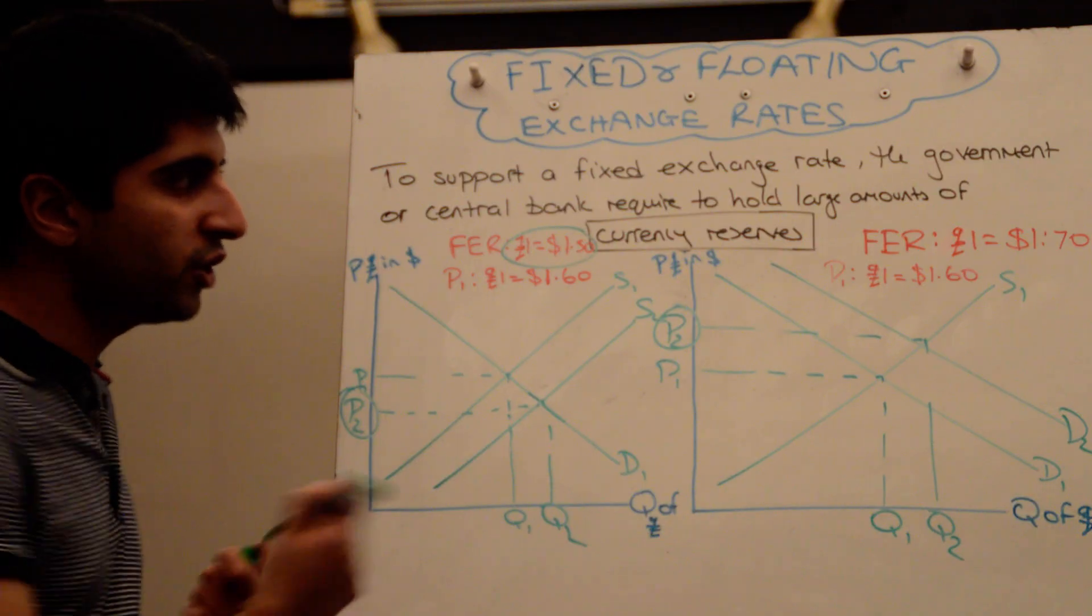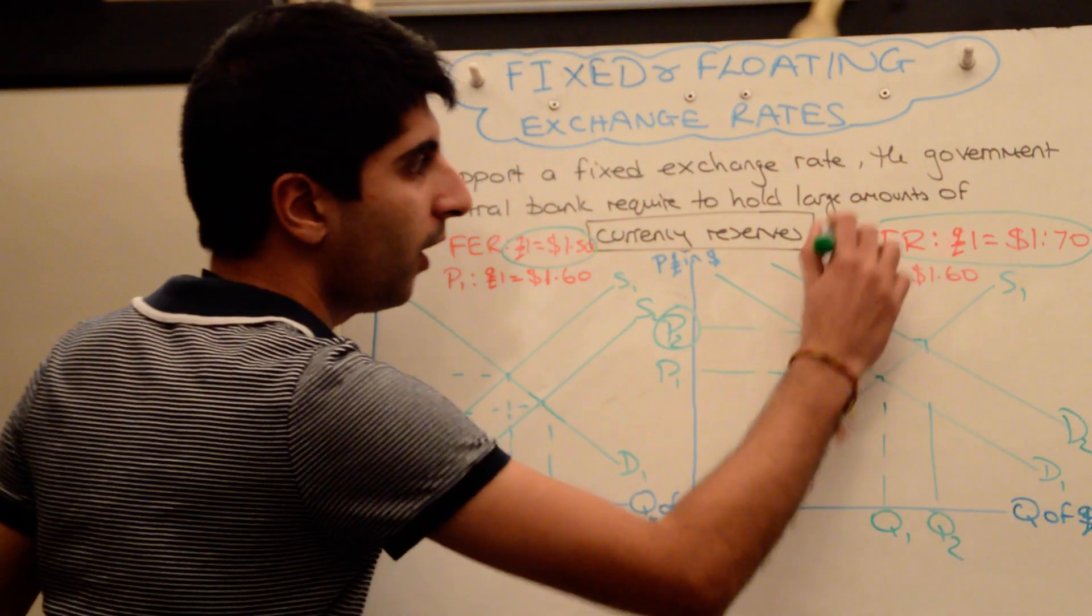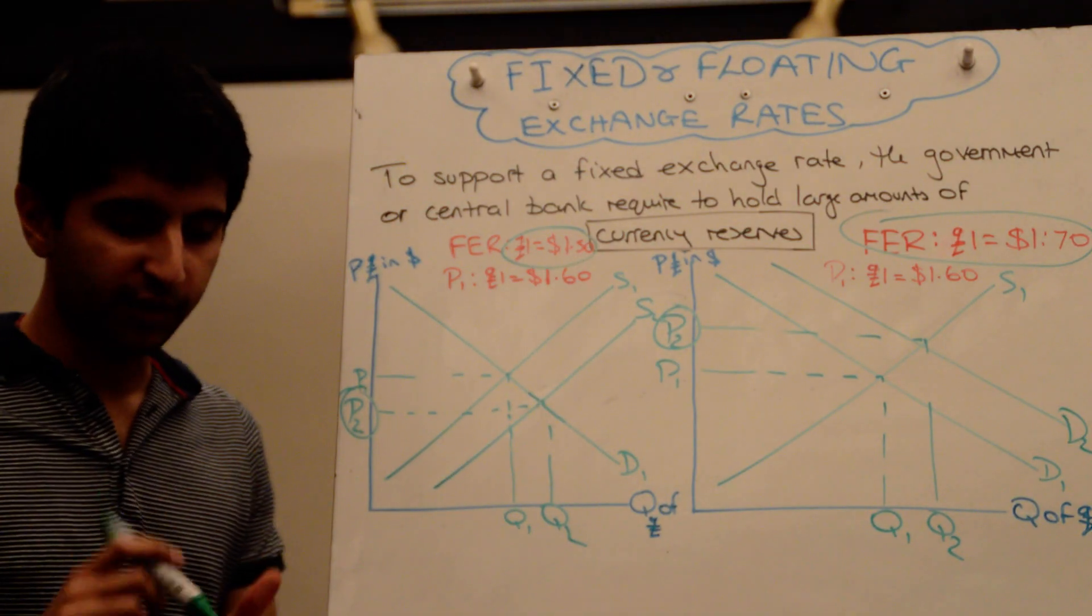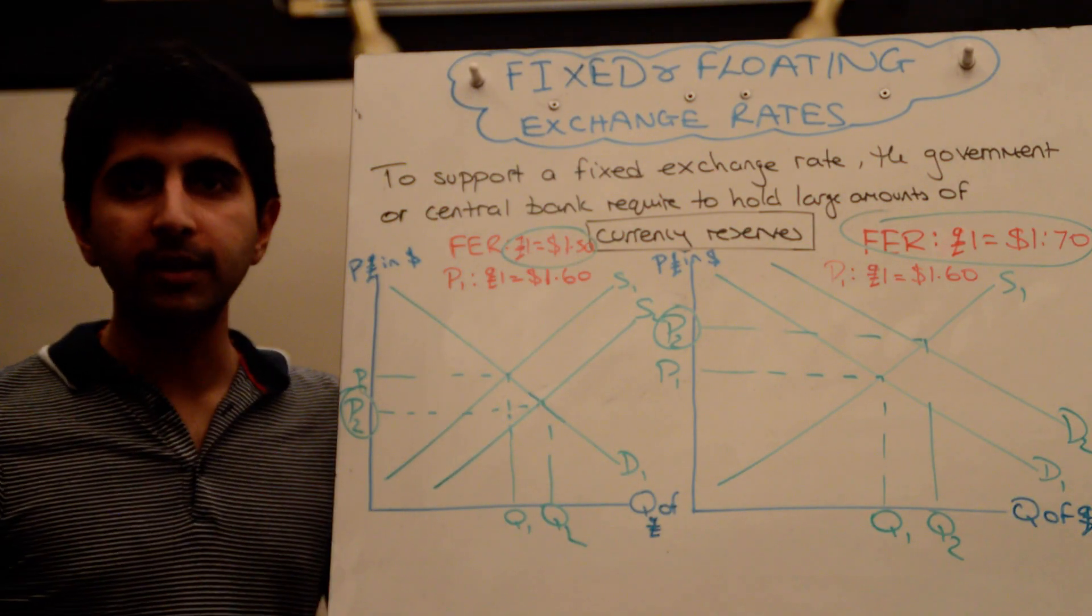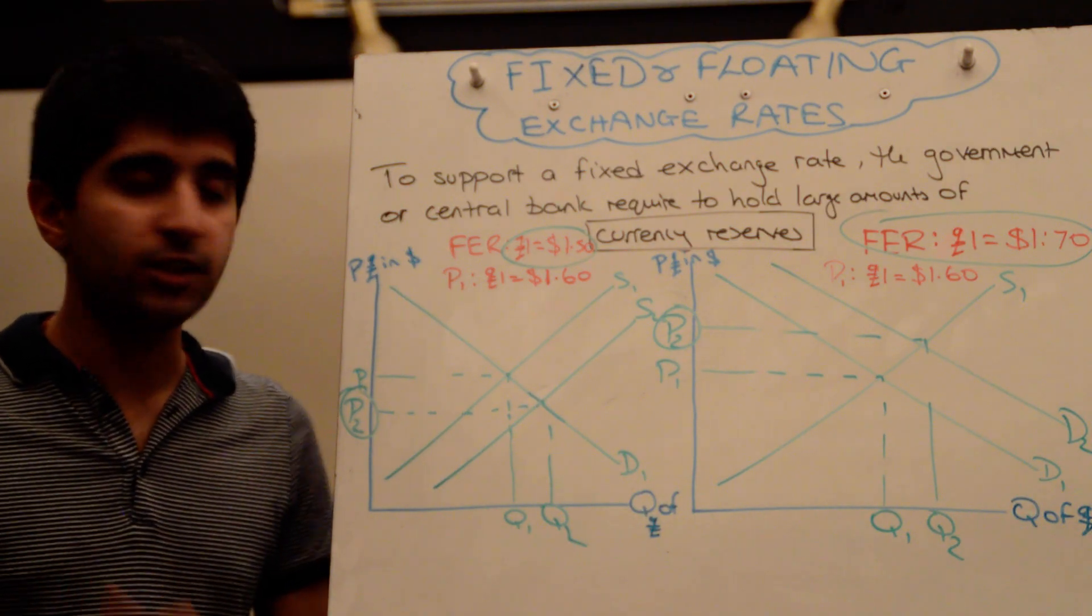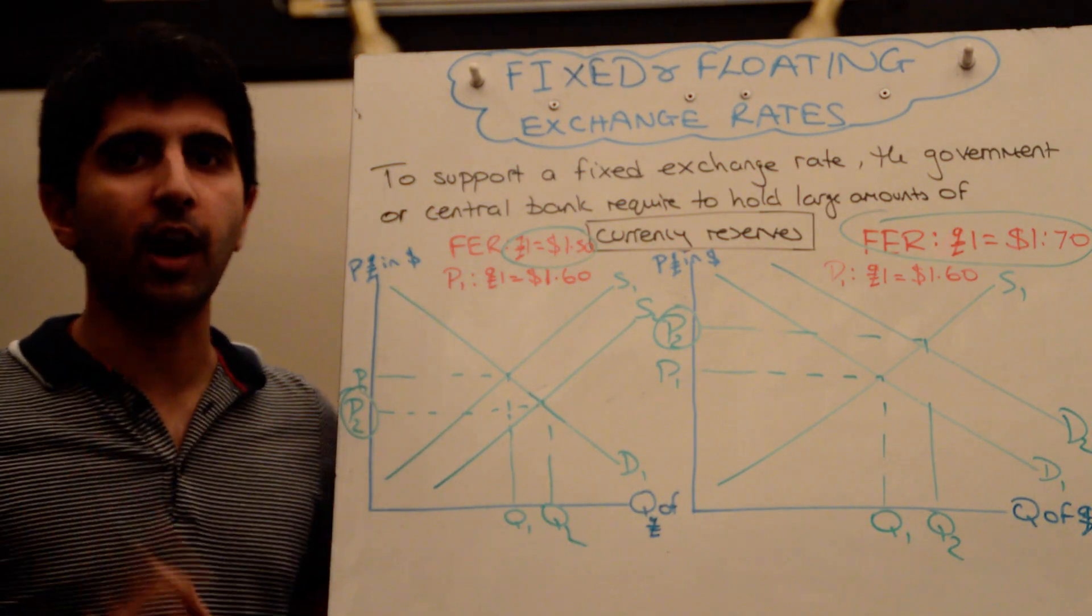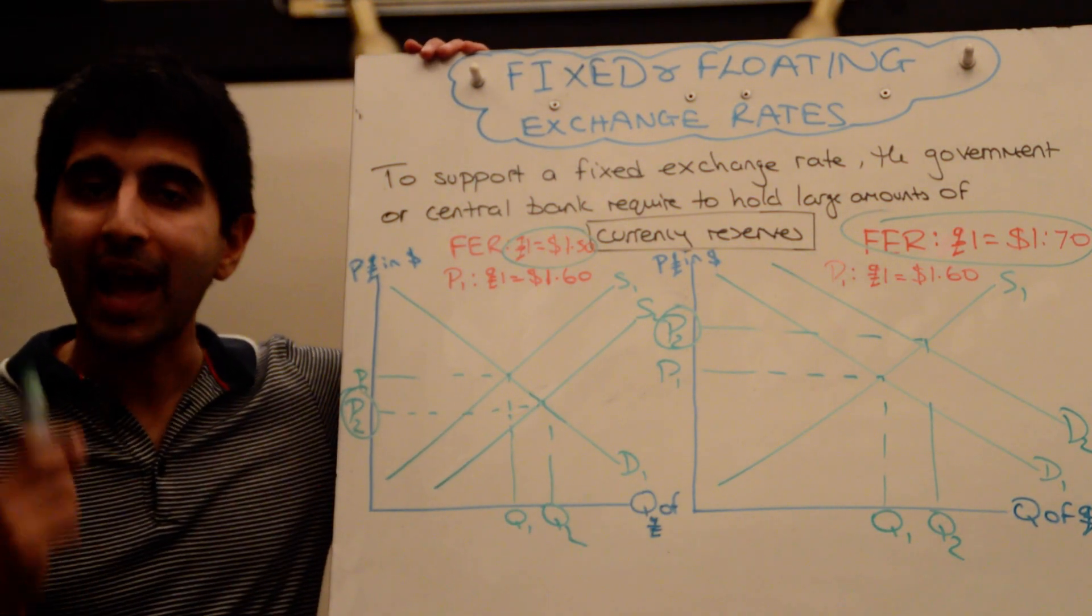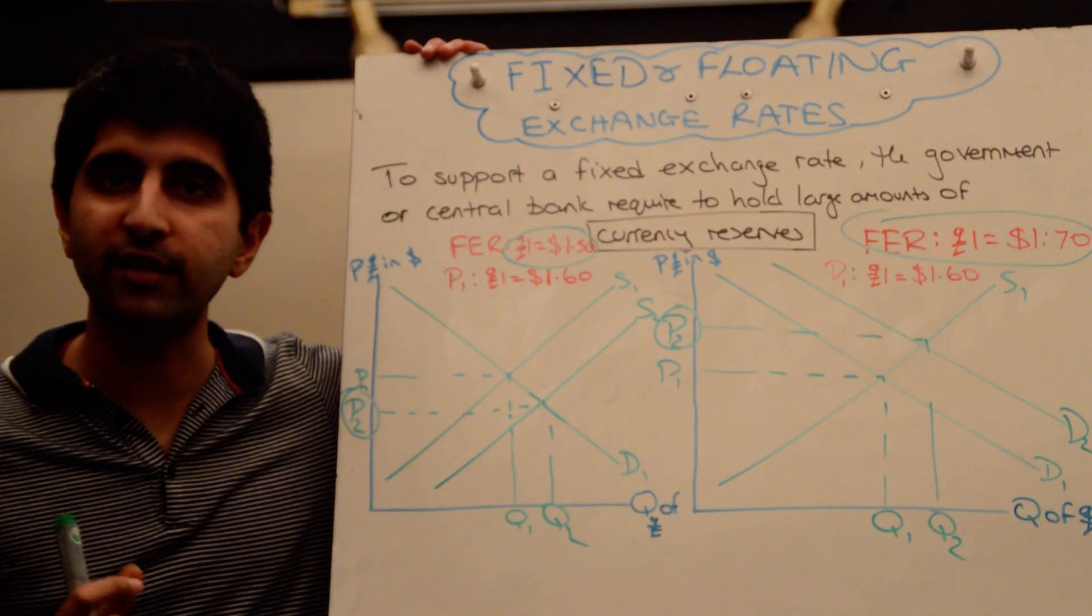Fixed exchange rates can also change. So, I've assumed on the left that the fixed exchange rate is £1 equals $1.50. If the UK government decides that it wants to change the fixed exchange rate, it can decide to. It can devalue the currency. Make it, instead, £1 equals $1.40 as the fixed exchange rate, lowering the value of the pound.